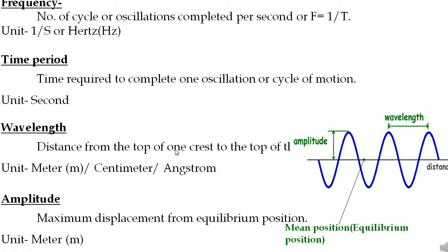Wavelength is the distance from the top of one crest to the top of the next crest, or from one trough to the next trough. The distance between two successive crests or two successive troughs is the wavelength. Wavelength can be measured in meters, centimeters, or angstroms.